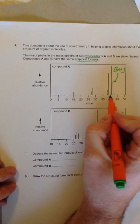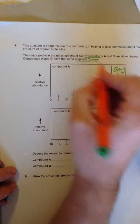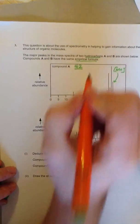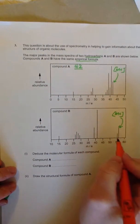So compound A, if we look, it's 40, 41, 42, which means the molecular mass of compound A is 42. The molecular mass of compound B is the peak furthest to the right, which is 55, counting up 56.